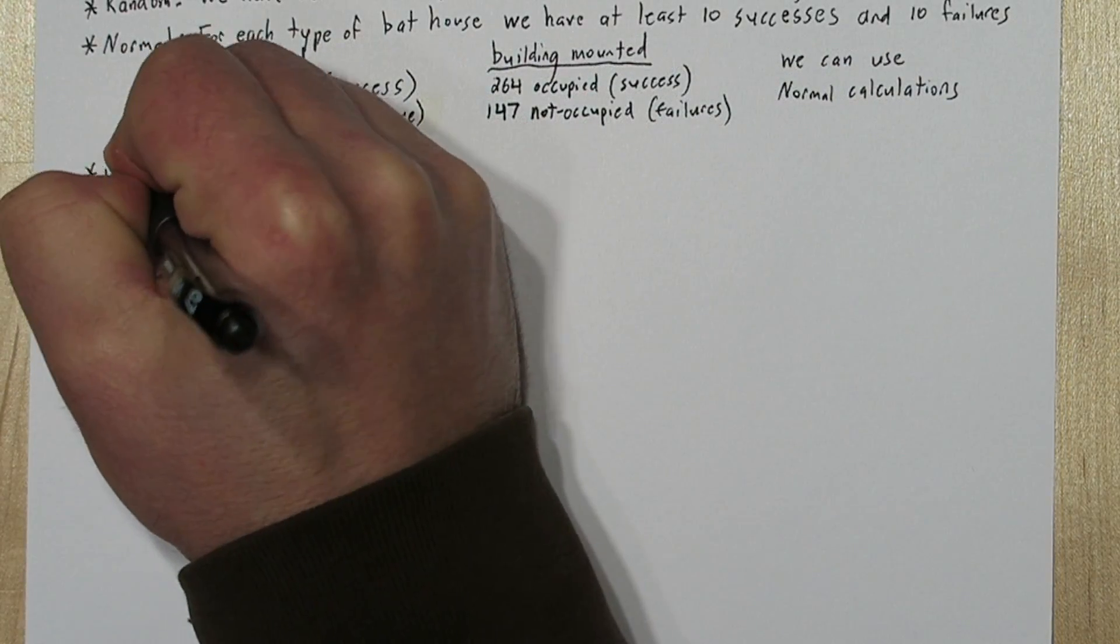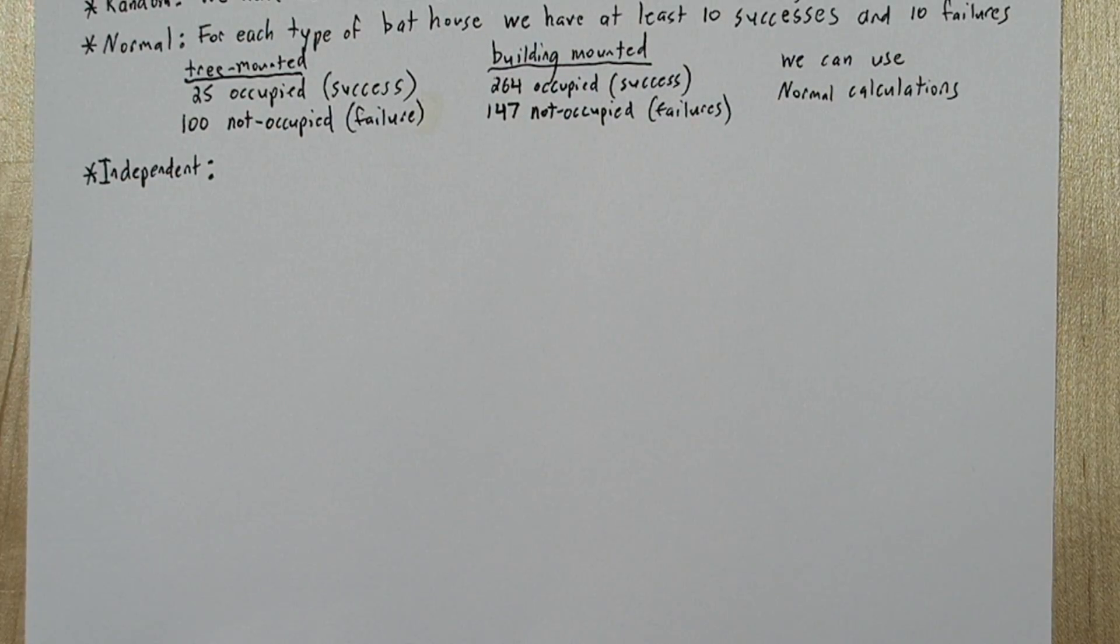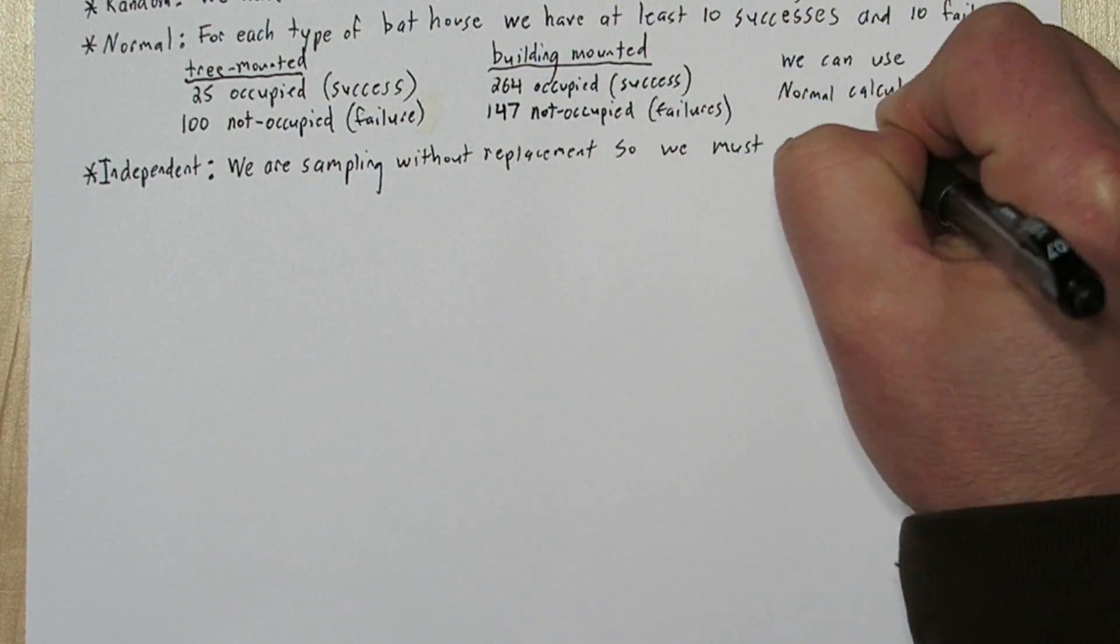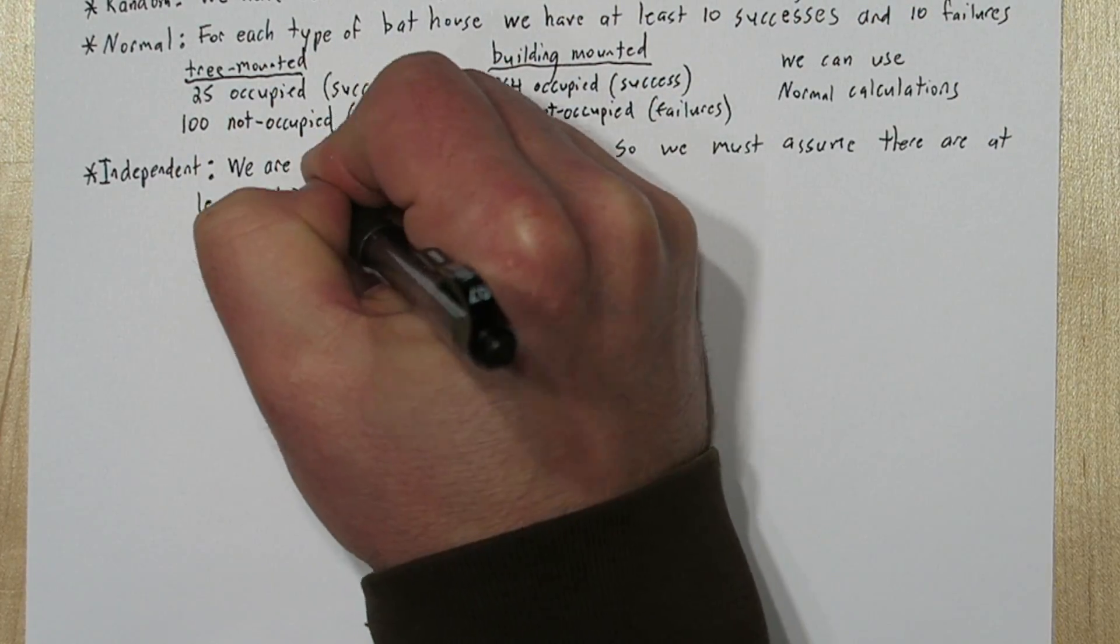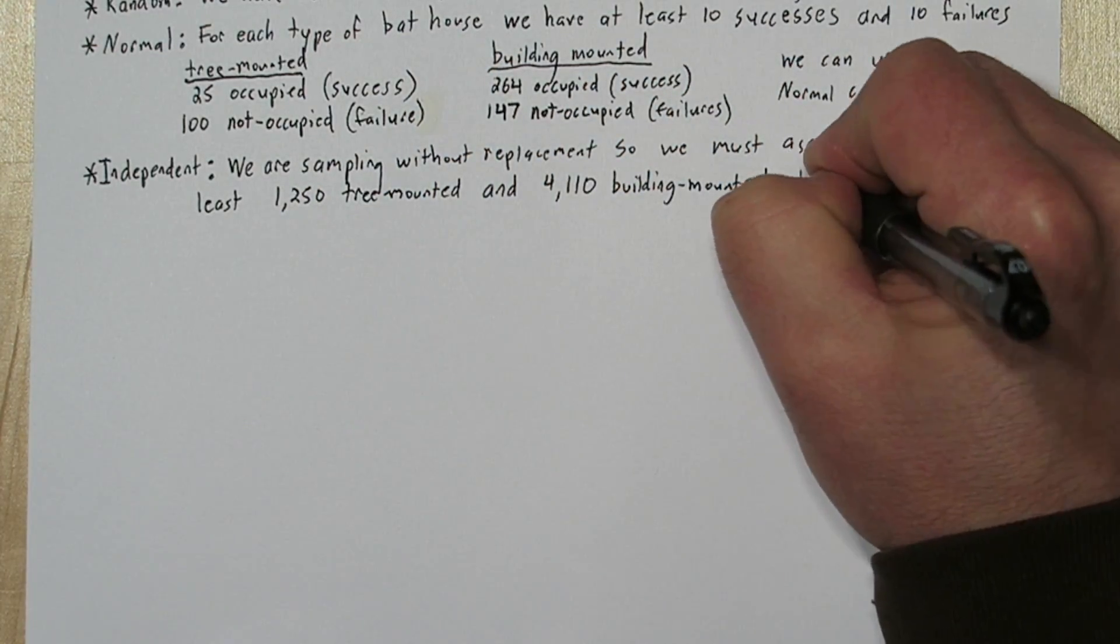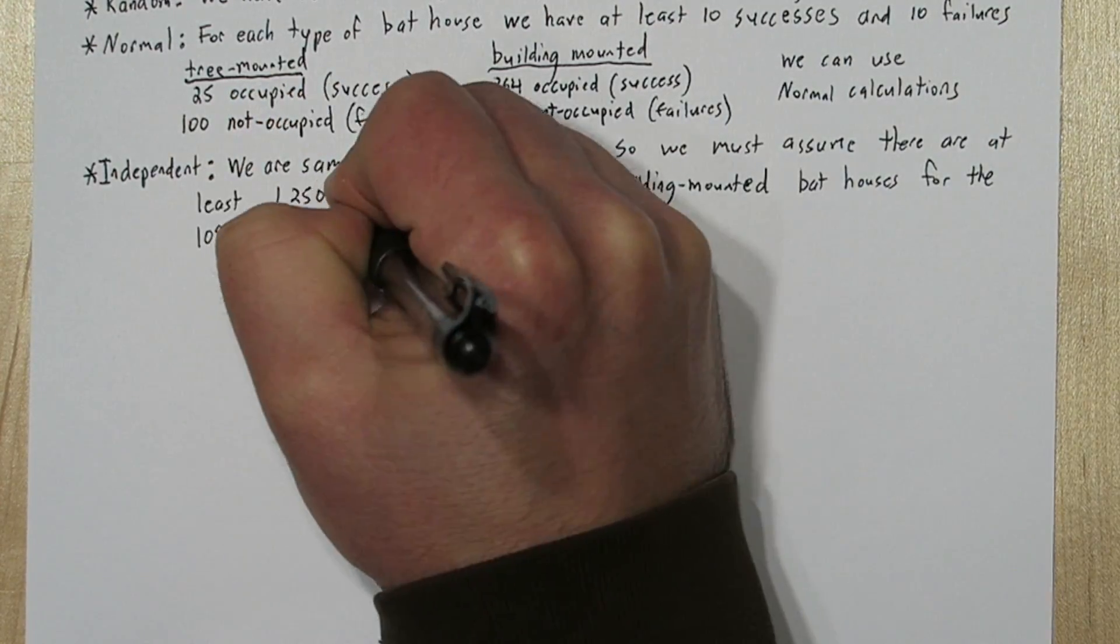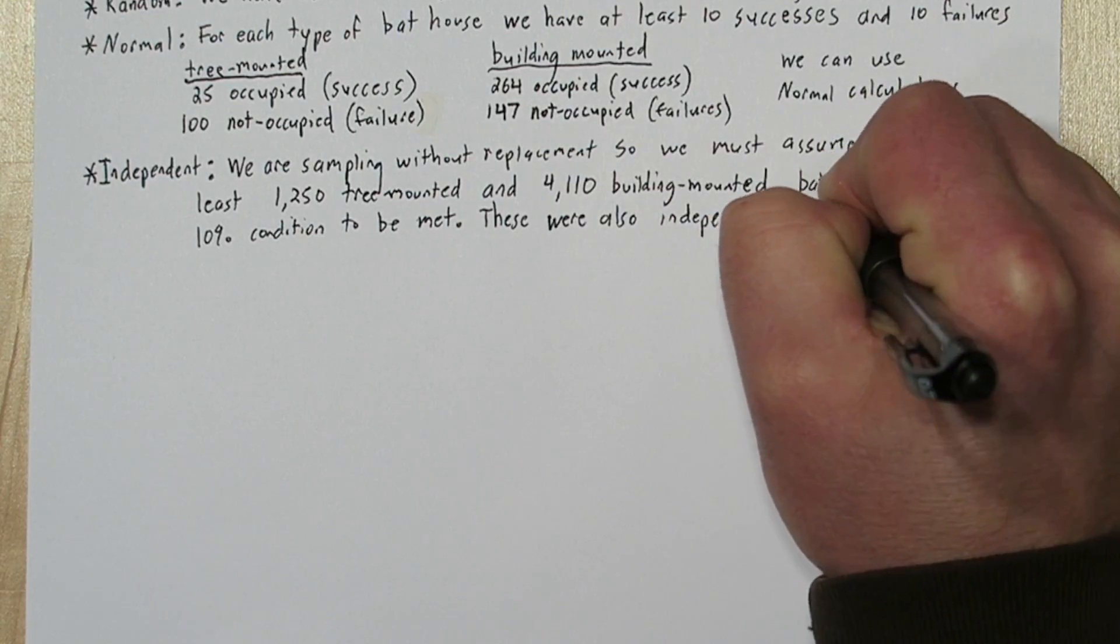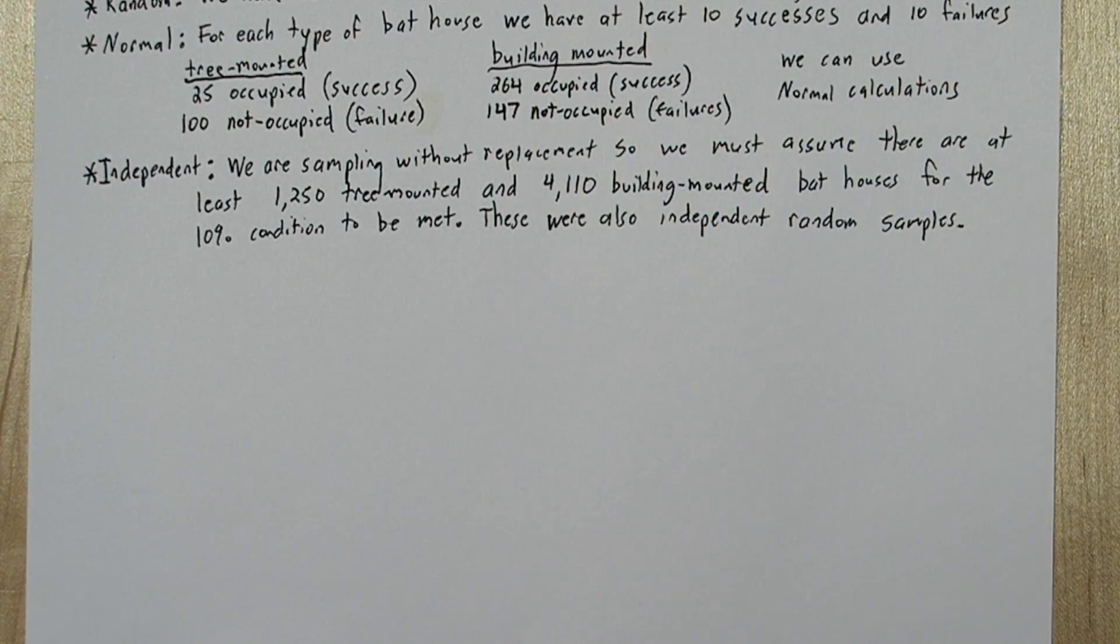Finally, for the independent condition, since we're sampling without replacement, we need to check the 10% condition. So as long as there's 1,250 tree-mounted and 4,110 building-mounted bat houses, the 10% condition is met. We also need to make sure that these are independent random samples. And since they're separate random samples, that's a safe assumption to make.